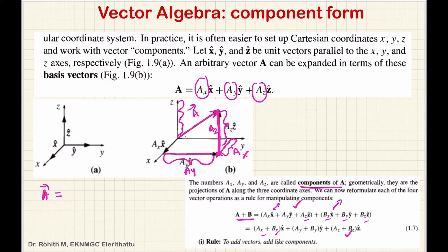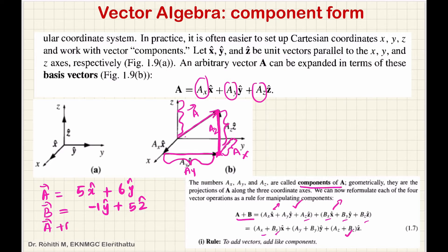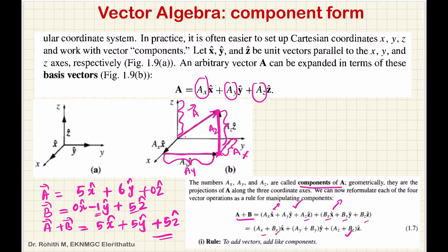Suppose you have a equal to 5x-cap plus 6y-cap, and b equal to minus 1y-cap plus 5z-cap. So a plus b: x-components add — 5 plus 0 gives 5x-cap. Y-components: 6 and minus 1 give 5y-cap. Z-component gives 5z-cap. This will be the sum of two vectors in component form. To add vectors, add like components.